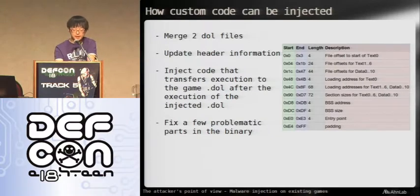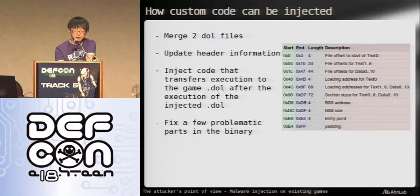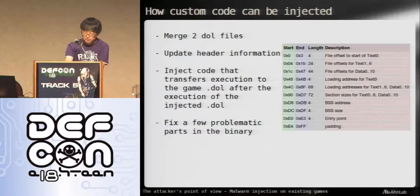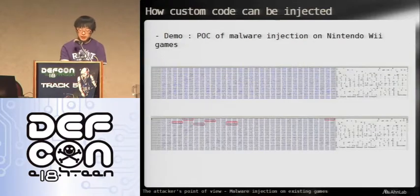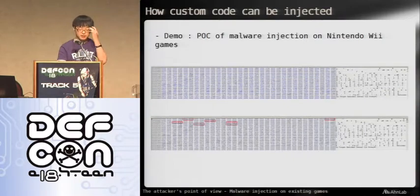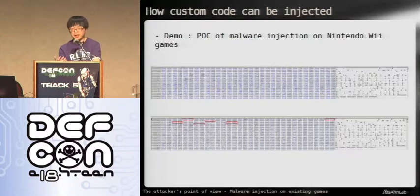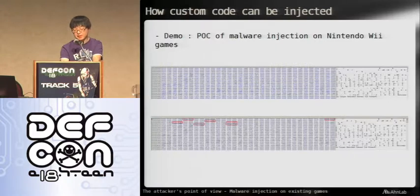After making those last fixes, all you have to do is pack it back neatly into a game ISO file and distribute it to the public using torrents or P2P or whatever you like. There's a small tool I made that semi-automates the injection process. I'm not trying to give you a full walkthrough of how to create Wii malware, but just to give you guys an idea of how it works, I'll show you a little demo.